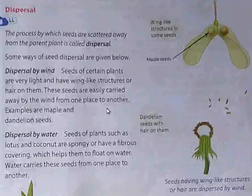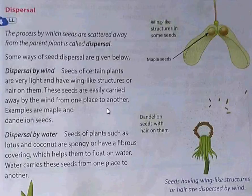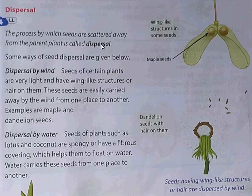Our today's topic is dispersal. Now what is meant by dispersal? Dispersal means the process by which seeds are scattered away from the parent plant is called dispersal. Now, some ways of seed dispersal are given in the picture here.